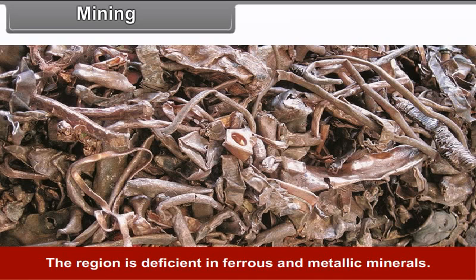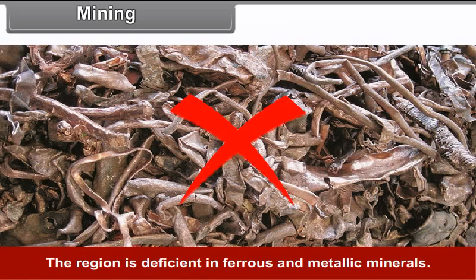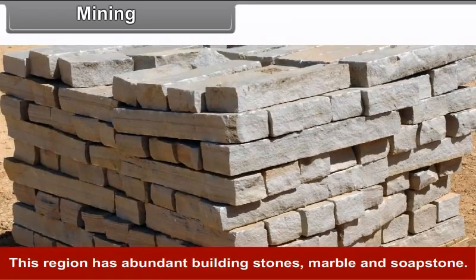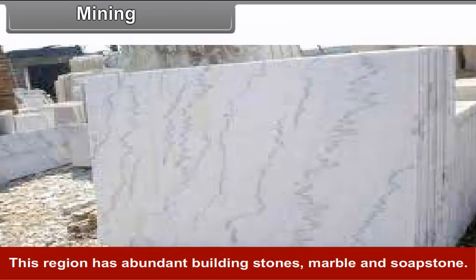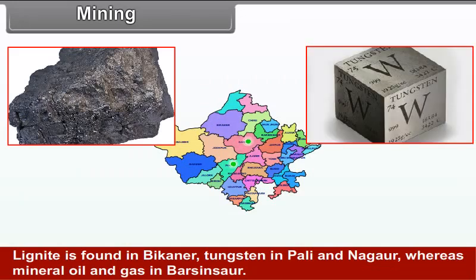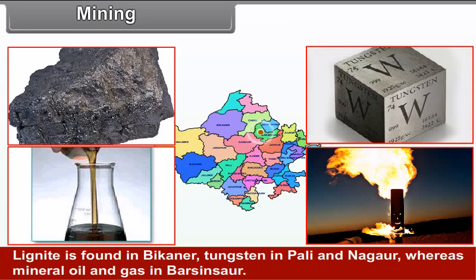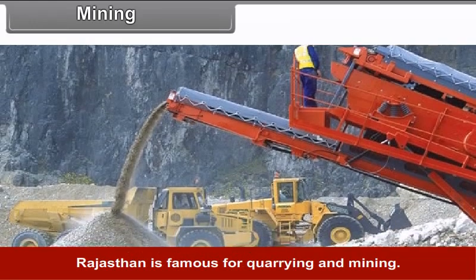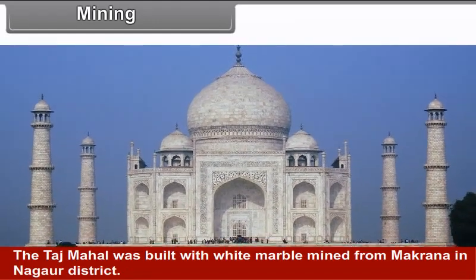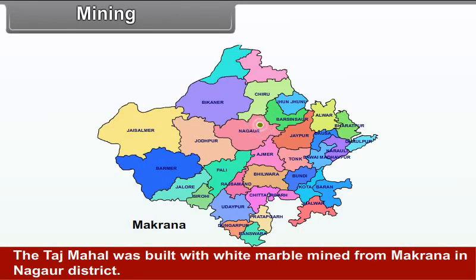Mining. The region is deficient in ferrous and metallic minerals. However, it contains 90% of the country's gypsum and 90% of the country's china clay. This region has abundant building stones, marble and soapstone. Lignite is found in Bikaner, tungsten in Pali and Nagaur, and mineral oil and gas in Balsingsaur. Rajasthan is famous for quarrying and mining. The Taj Mahal was built with white marble mined from Makrana in Nagaur district.